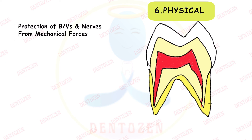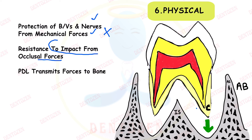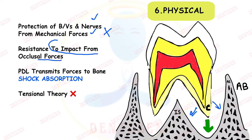The last function is physical — protection of blood vessels and nerves from mechanical forces, plus the ability of the PDL to resist the impact of occlusal forces and transmit them to the bone with the help of fibers. This is called the shock absorption function. This has already been explained under the support function, where forces are transmitted by the fibers as explained by the tensional theory and viscoelastic theory.